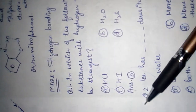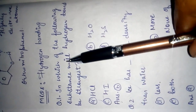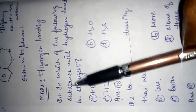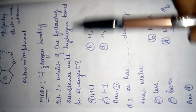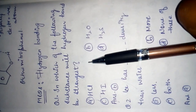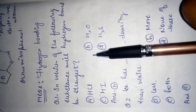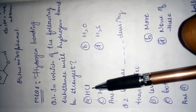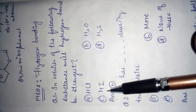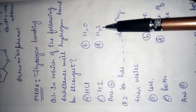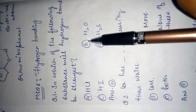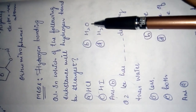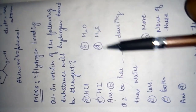First MCQ: in which of the following substances will hydrogen bonding be strongest? Options: (a) HCl, (b) H₂O, (c) hydrogen iodide, (d) H₂S. The answer is (b) H₂O, because oxygen is more electronegative, so it forms the strongest hydrogen bond with hydrogen.